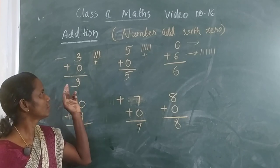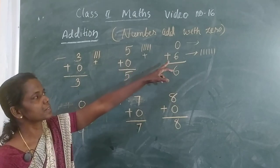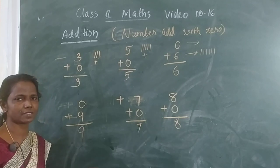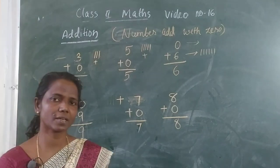3 plus 0? 3. 0 plus 6? 6. So you get that, your same number. Is it clear? Thank you.